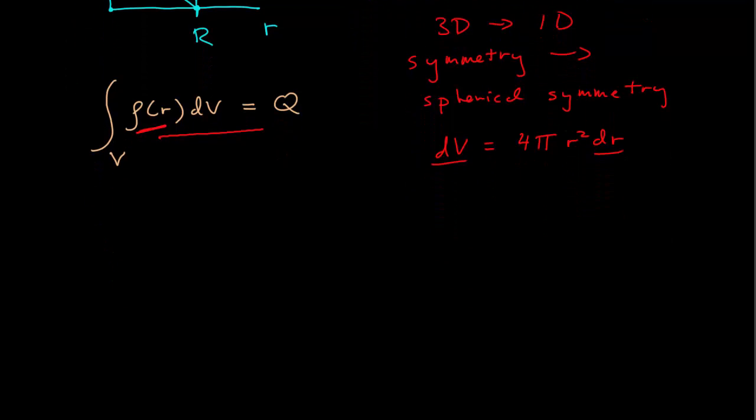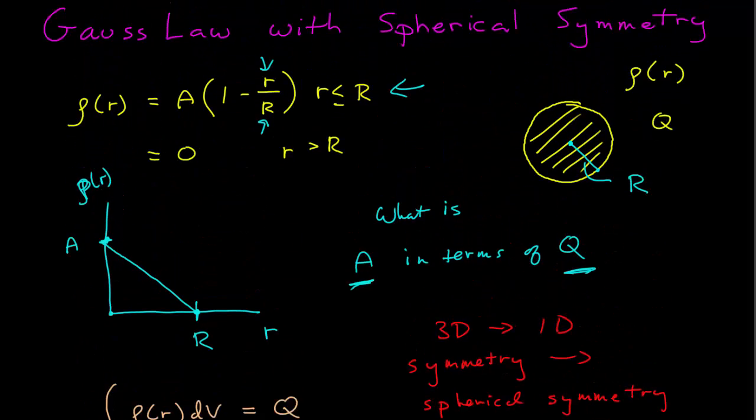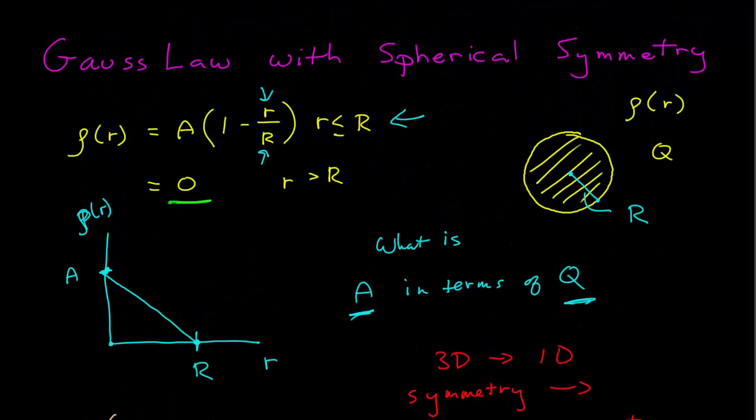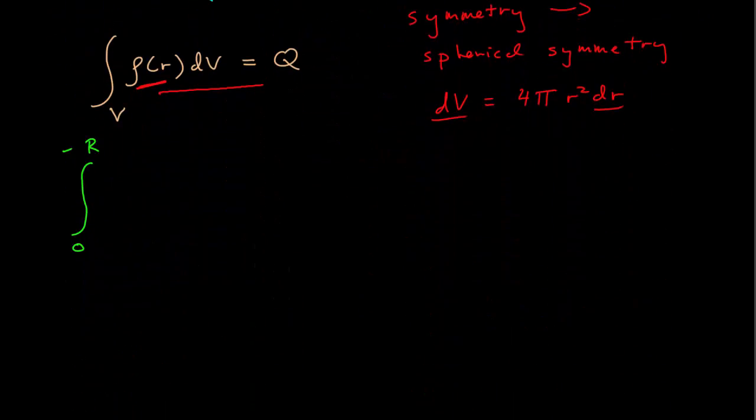So now we have an integral over the radius, and we're integrating from zero to capital R. That's because we can integrate to infinity, but since ρ is zero for anything beyond R, we only need to integrate out to capital R. The density distribution is A(1 - r/R), and then our volume element is 4πr²dr.